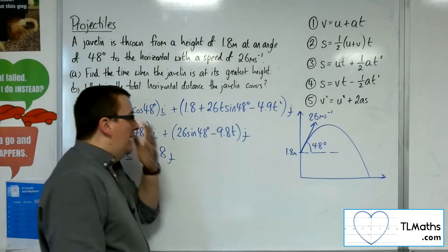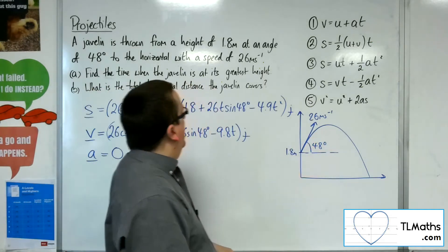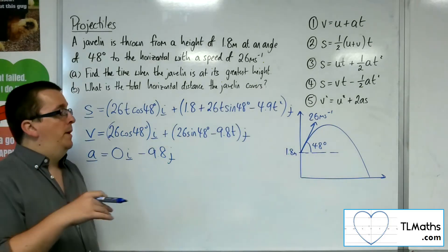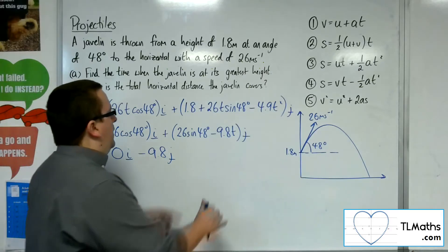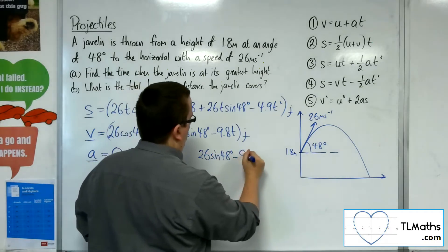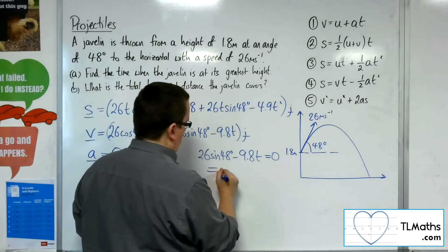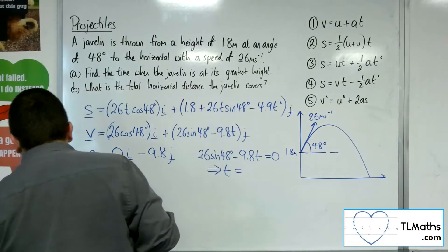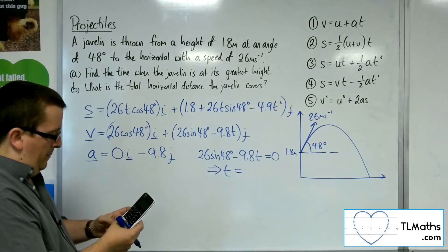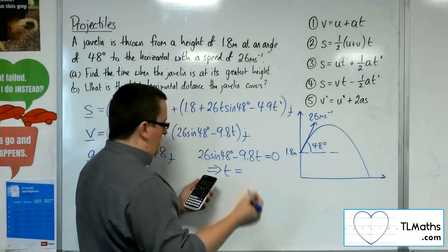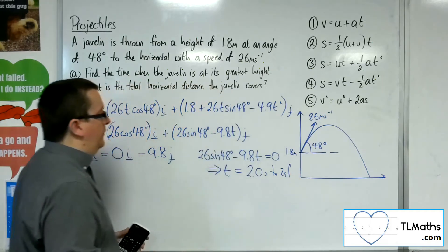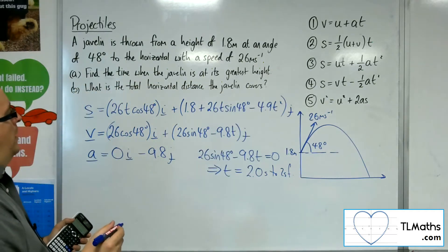So I want to find the time at which the javelin is at its greatest height, and that will be when the vertical component of the velocity is 0. So that is this piece here. So 26 sine 48 take away 9.8t equals 0. Rearranging: 26 times sine 48 divided by 9.8 gives 1.97, so 2.0 seconds to two significant figures, because gravity is given to two significant figures as well.